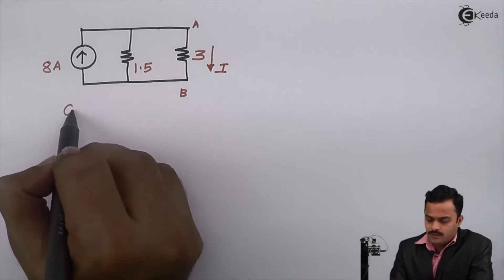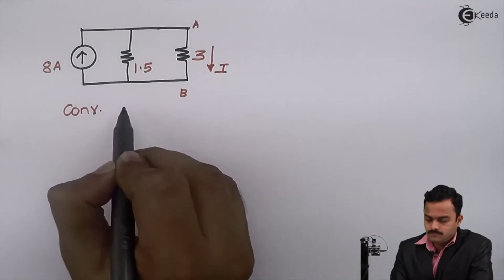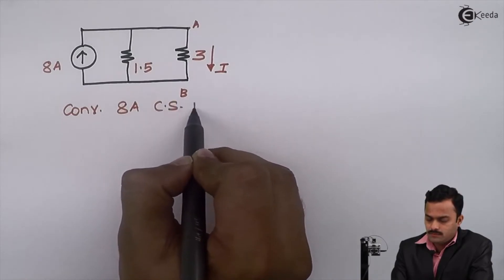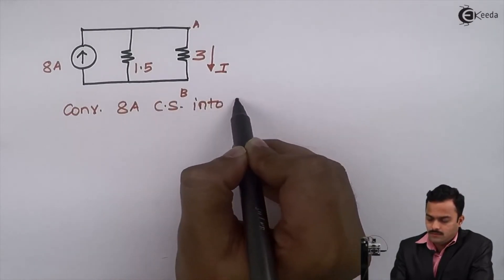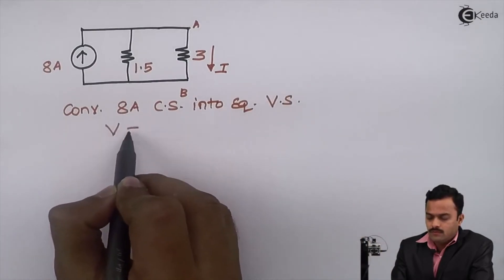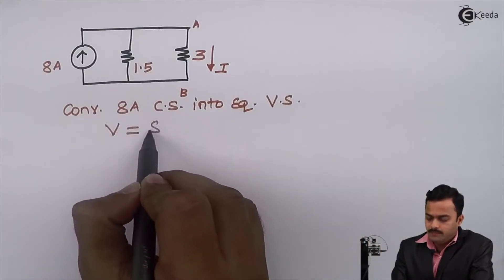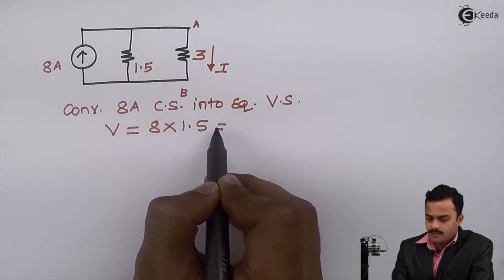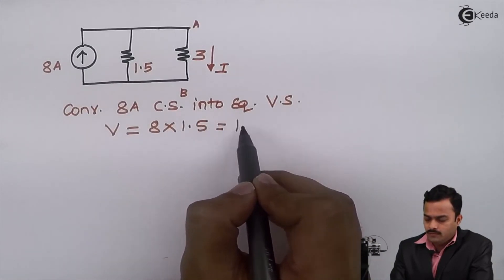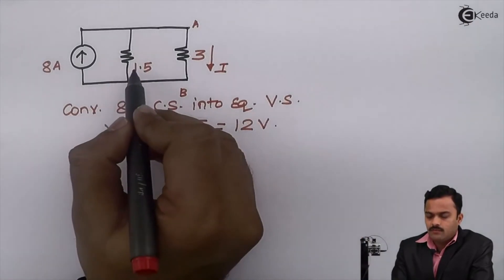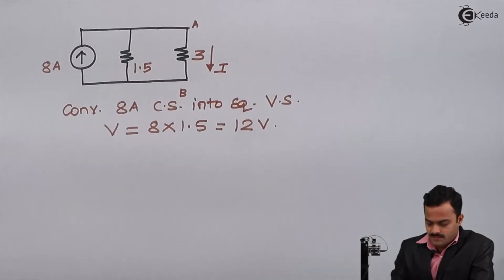I will convert the 8 ampere current source into equivalent voltage source. The voltage value will be simply the multiplication of 8 and 1.5, that will give me 12 volt. And this 1.5 will come in series with this 12.